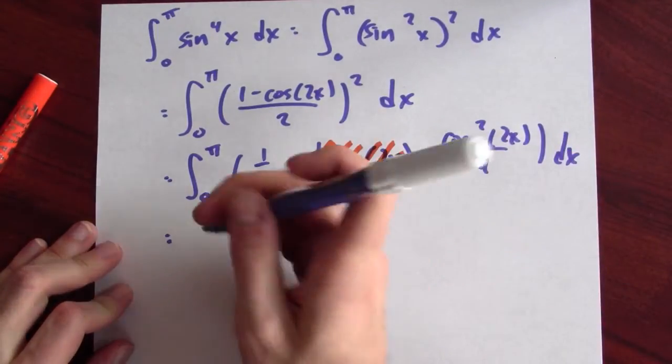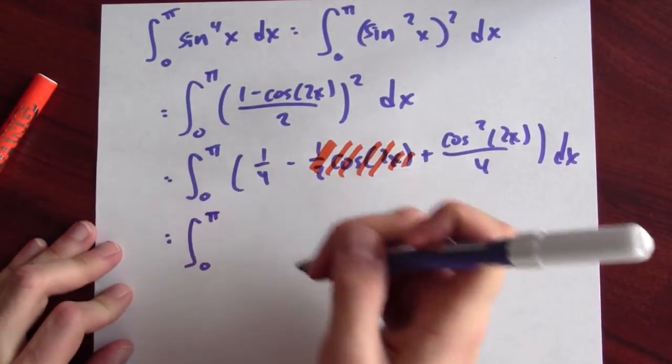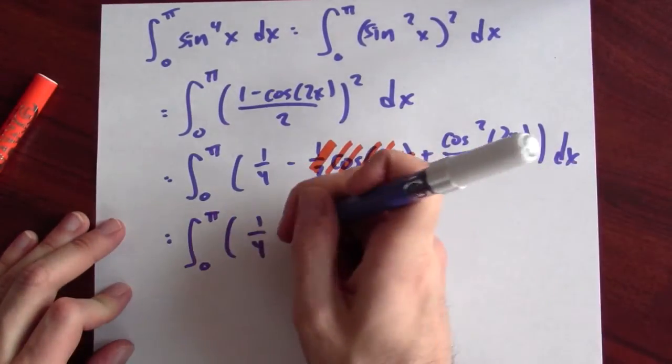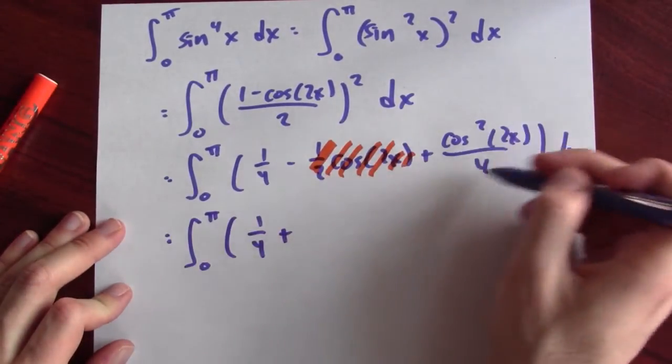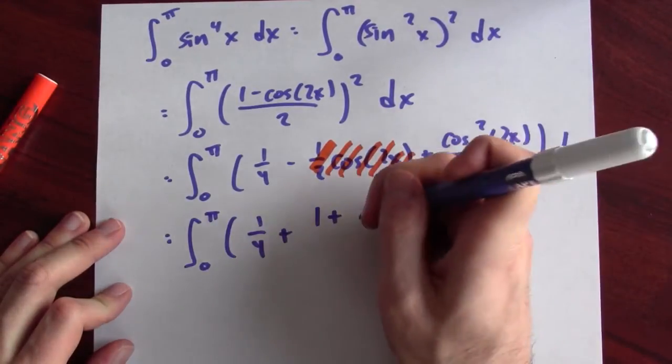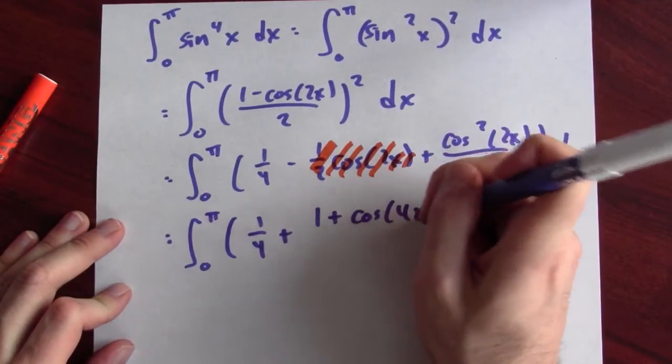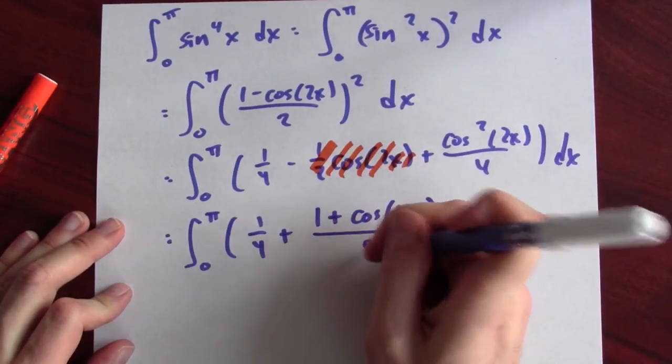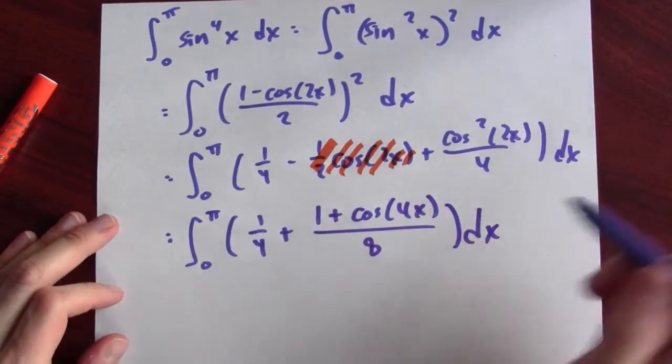And I can keep on going. I can also use the half angle formula here. So this is the integral from 0 to pi. Well, I've still got the 1 fourth plus, and then what does this become by the half angle formula? This is 1 plus, and instead of 2x, it's cosine 4x over 8.